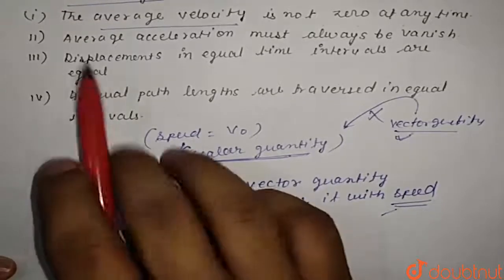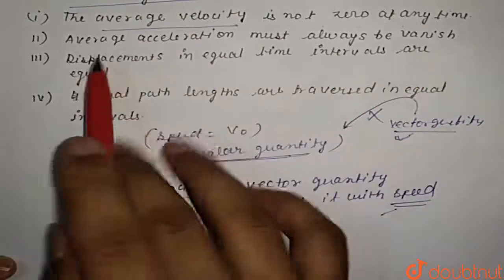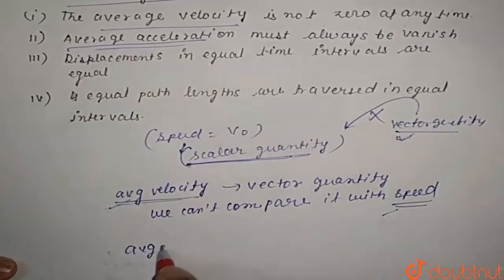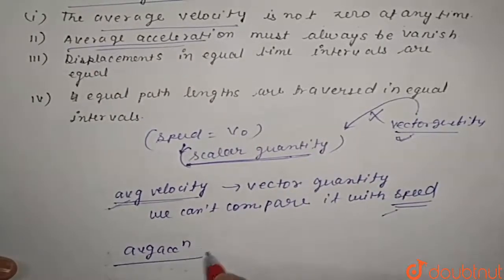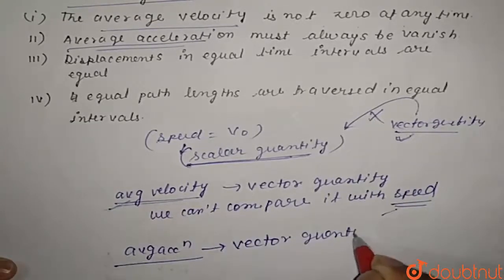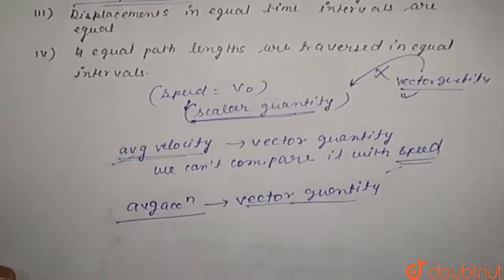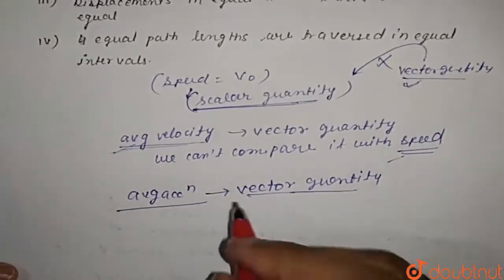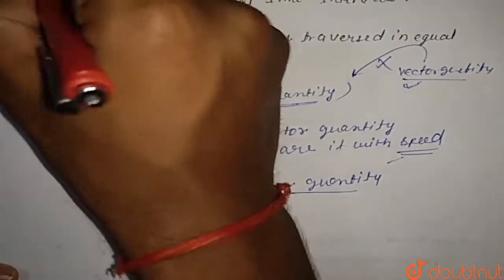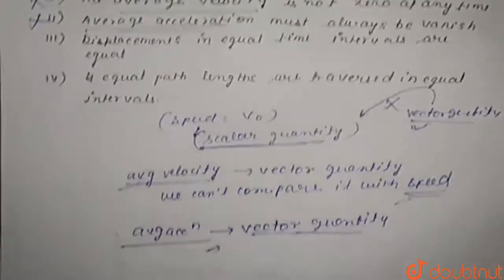Now option two: average acceleration must always vanish. Average acceleration is also a vector quantity. Since we cannot compare a vector quantity with speed, which is a scalar, we also cannot make any conclusion about average acceleration. So option two is also incorrect.